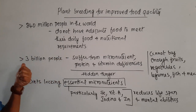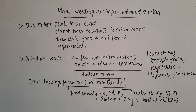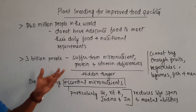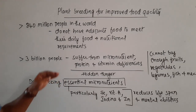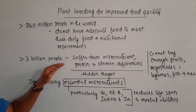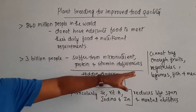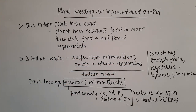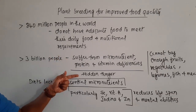More than 3 billion people are suffering from micronutrient deficiency, protein deficiency, and vitamin deficiencies. This problem of micronutrient deficiency arises because they are not able to buy enough fruits, vegetables, legumes, fish, and milk. When these foods are not consumed, there will definitely be micronutrient, protein, and vitamin deficiency problems — and this is what we call hidden hunger.